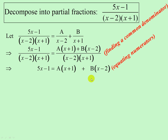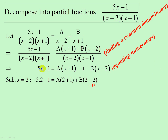Now we have A and B to find. I can substitute any value of X I like. To get rid of B, I substitute x equals 2 — that makes the B term become 0 times B, so B disappears, and we can solve for A.